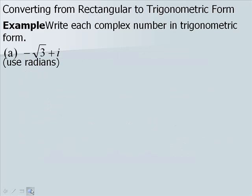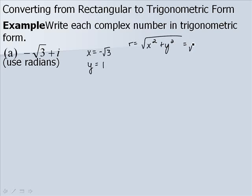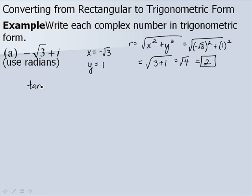In this example we want to write negative square root of 3 plus i in trigonometric form using radians. Here x equals negative square root of 3 and y equals 1. So r equals the square root of negative square root of 3 squared plus 1 squared, which gives the square root of 3 plus 1, or the square root of 4, which is 2. Then tangent of theta equals y over x, or 1 over negative square root of 3, which equals negative square root of 3 over 3 after rationalizing the denominator.